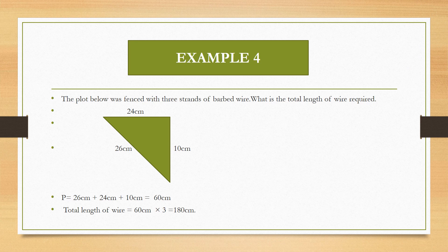This is our last example for today. The plot below was fenced with 3 strands of barbed wire. What is the total length of wire required? Very easy. Just understand that fencing is around the figure, so fencing is going to take place around this plot. Nobody is going to find the area—we are finding the perimeter. Why? Because fencing indicates that we are fencing around a figure, and around a figure is the perimeter. Distance around a figure is our perimeter.